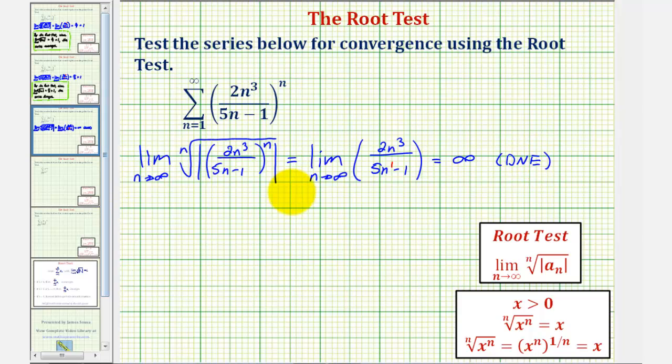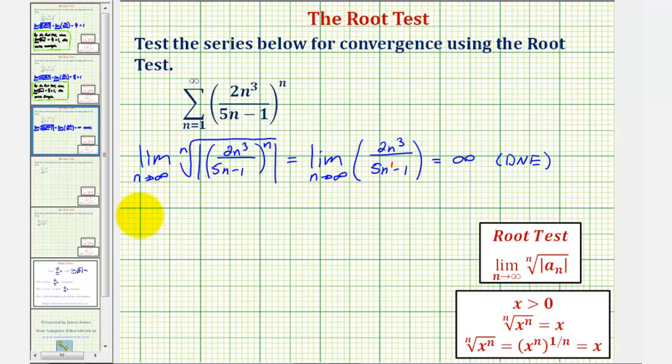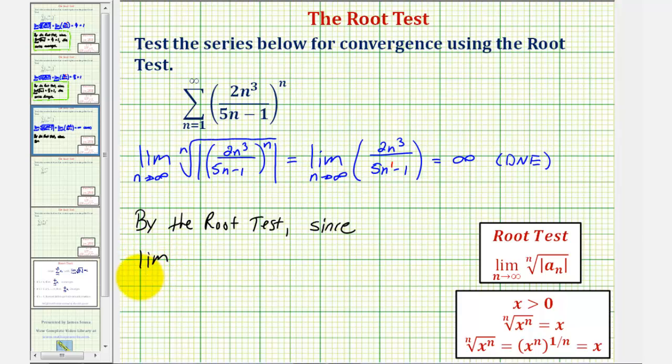But because this limit does equal infinity, we know the given series diverges. So by the root test, since the limit as n approaches infinity of the nth root of the absolute value of a sub n equals infinity, the series diverges.